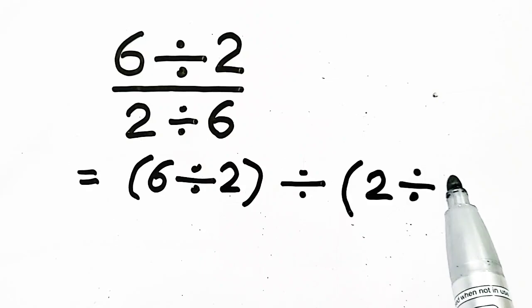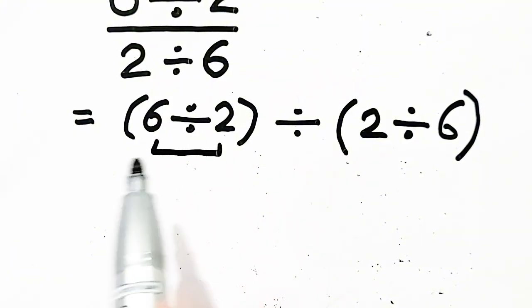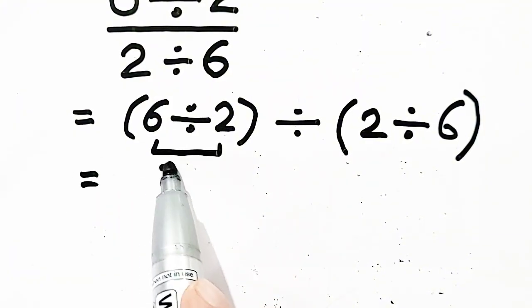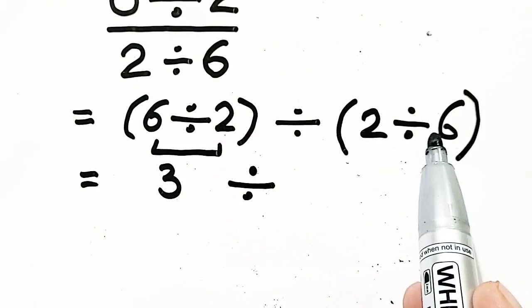Six divided by two is equal to three. So now we have three divided by two divided by six, which we can write in another way.